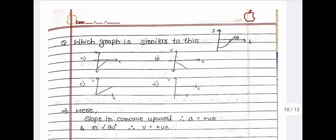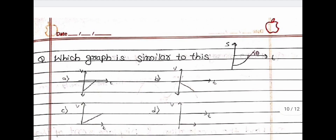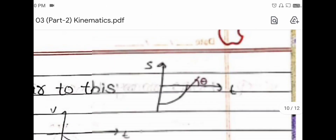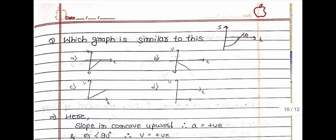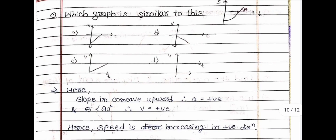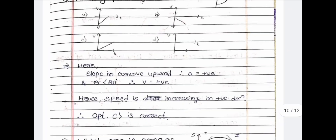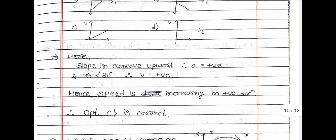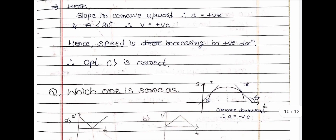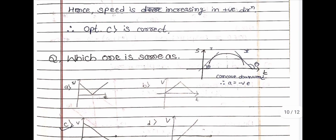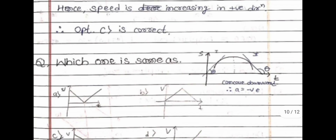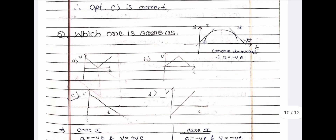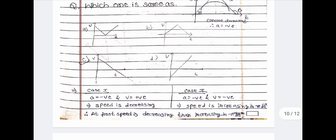Now one more graph question: which graph is similar to the given one? Let us zoom in. You have to find which option is correct — option C is correct. Next question: which one is the same as this graph? The answer to this question is here.